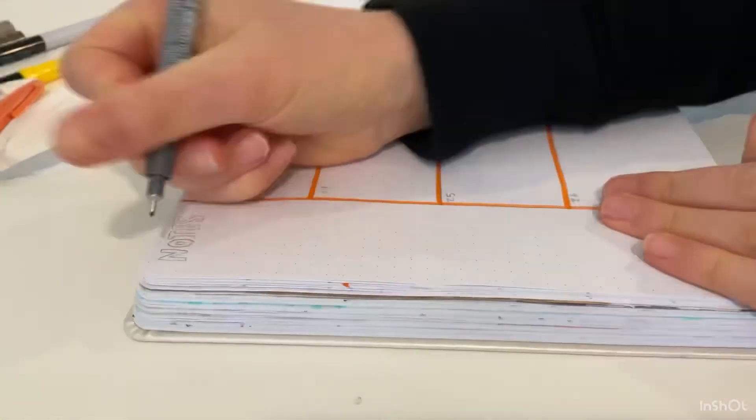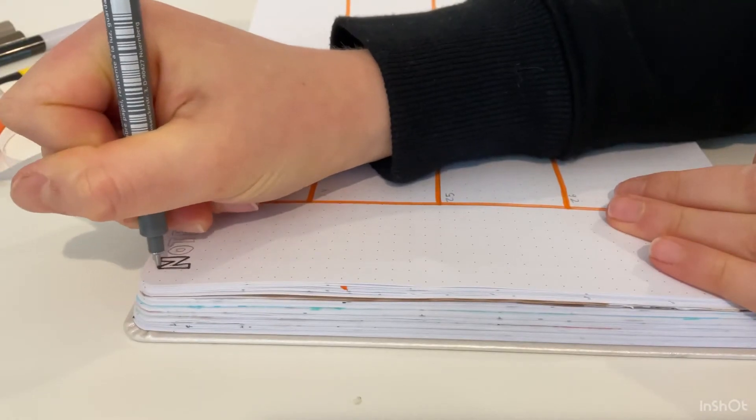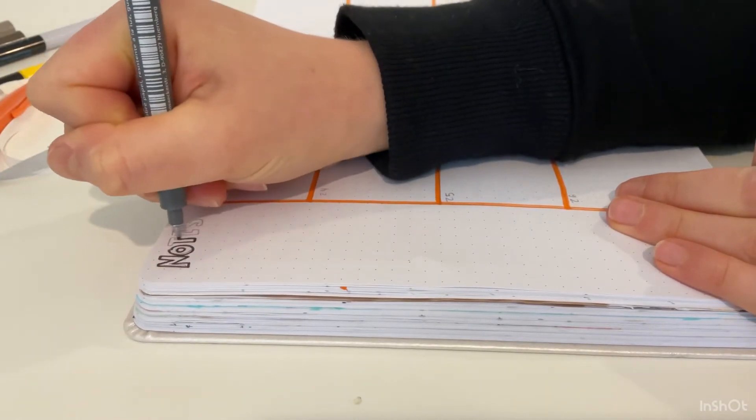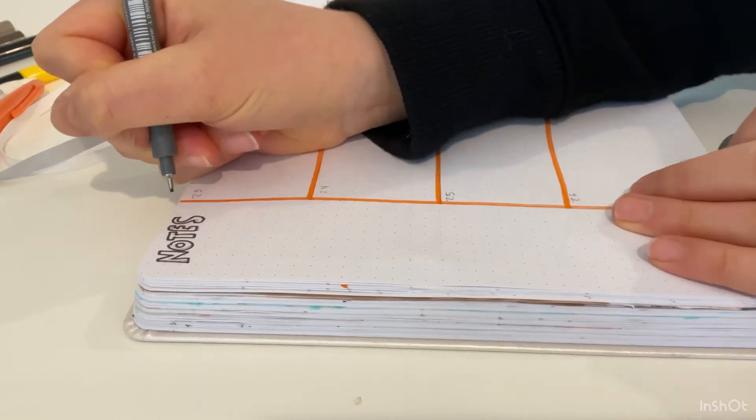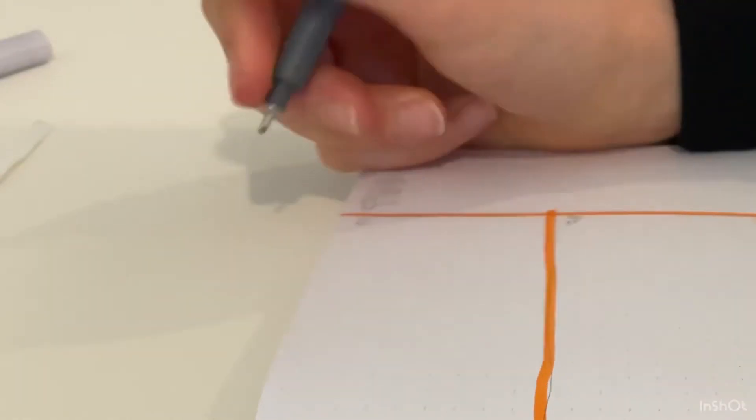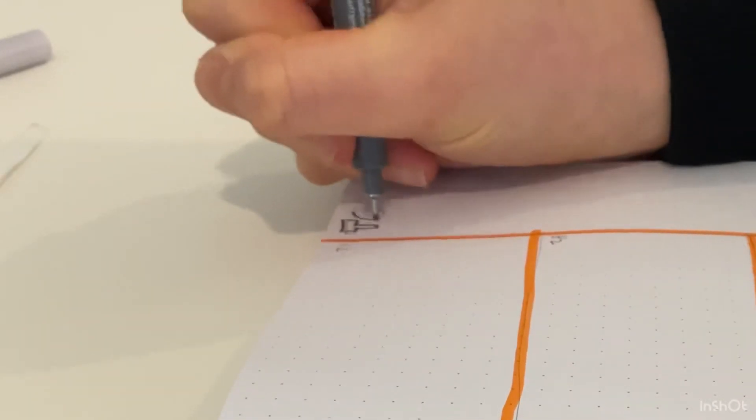Now I'm just going to do these little notes, and for these ones I didn't want to color them in just to add something different. I'm just going to finish this and the little to-dos and add the numbers, and that should be it for this weekly spread.